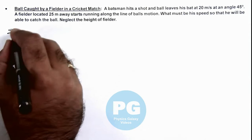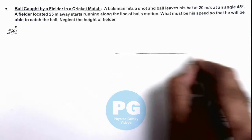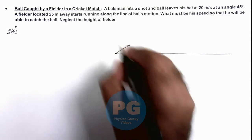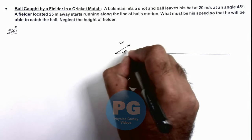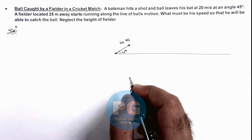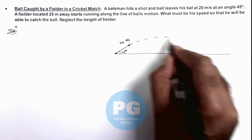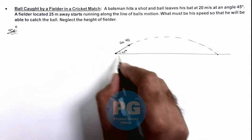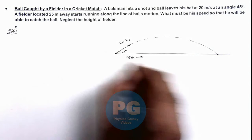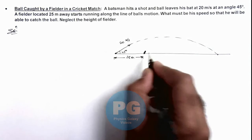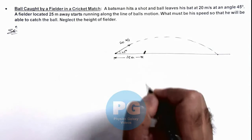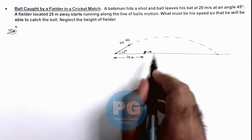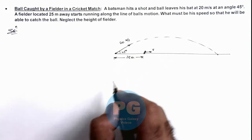Here, if we draw the figure, you can see that on the ground from a point, a shot is fired at an angle of 45 degrees with a speed of 20 meters per second, and it follows a projectile path. At a distance of 25 meters away from the batsman, a fielder is located. The height of the fielder we are given to neglect. He starts running in such a way that he has to catch the ball, so we are required to find the speed of this fielder.